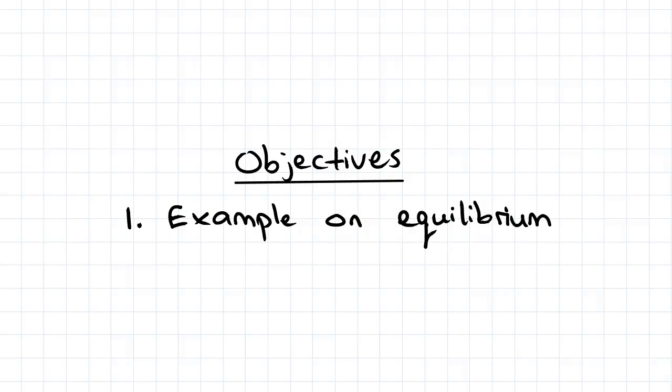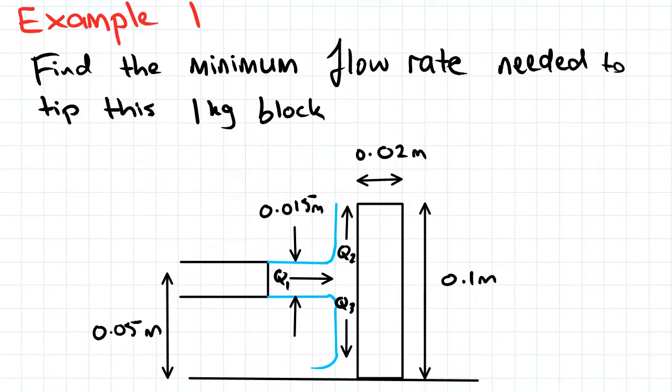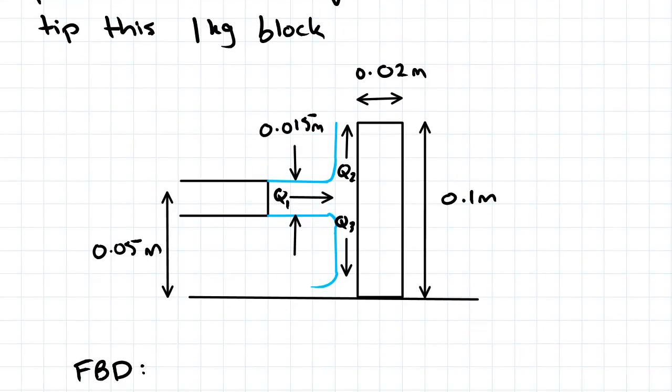Hey guys, in this video we're looking at an example on equilibrium. This example is mildly abstract. Find the minimum flow rate needed to tip this one kilogram block. Here's the block, we've got a pipe shooting a flow, and we're asked to find at what flow rate the block will tip.